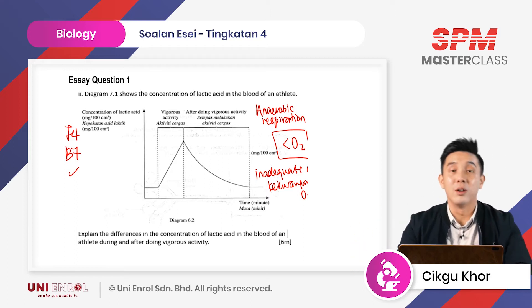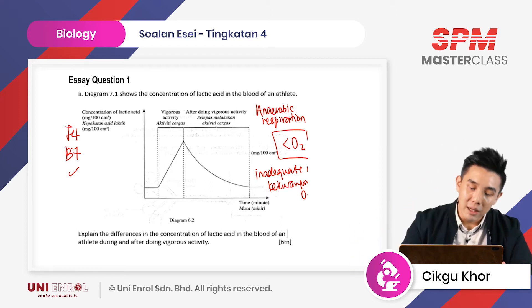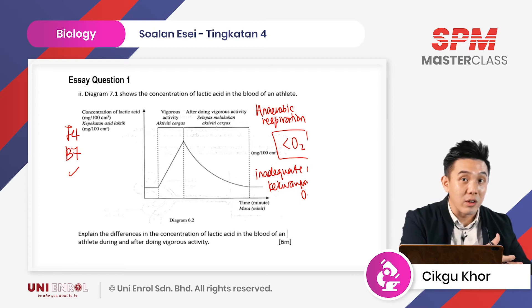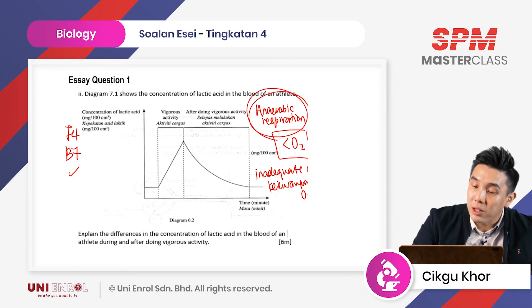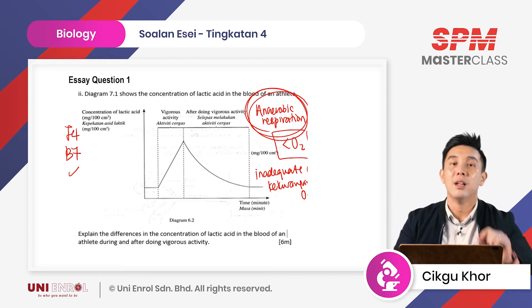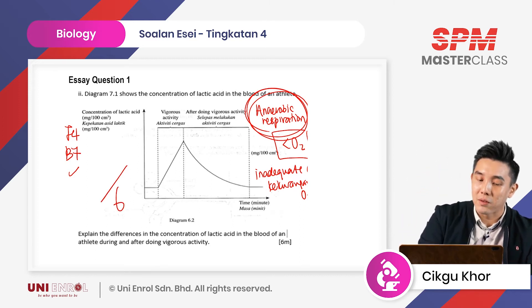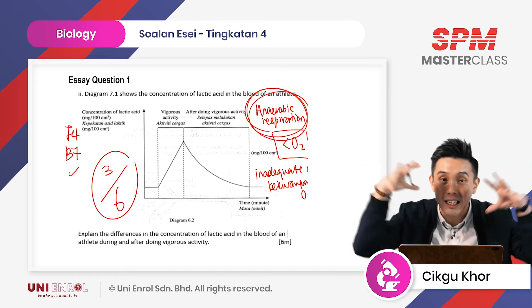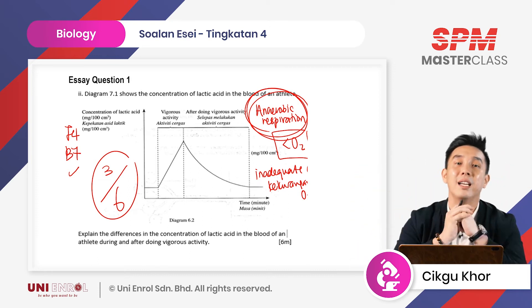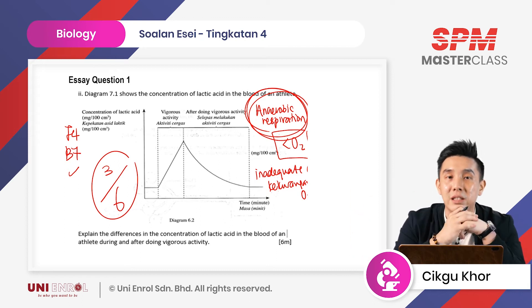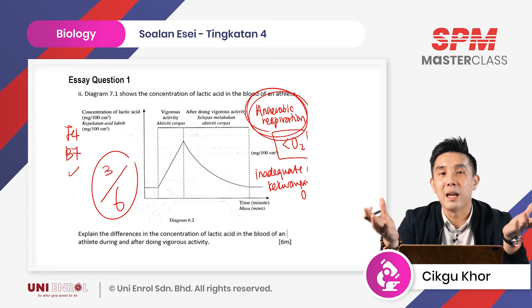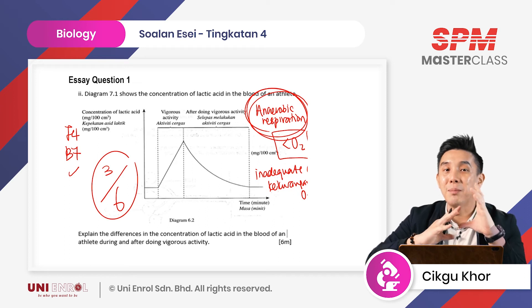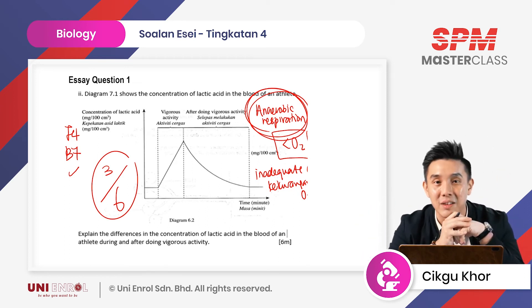The question says: explain the differences in the concentration of lactic acid in the blood. My point is this — if you use a reference book and you copy all the points for anaerobic respiration as your answer, trust me, out of six marks, you can only get half. Even if you take all the reference books and copy everything into your answer paper, you'll only get half. Why? Because SPM examiners are not stupid — they know you know your facts, but they also know you might not be able to adapt to new questions.